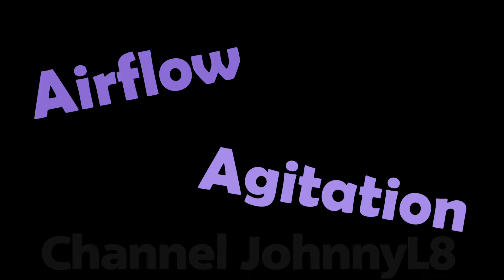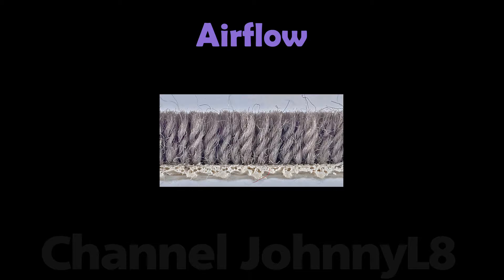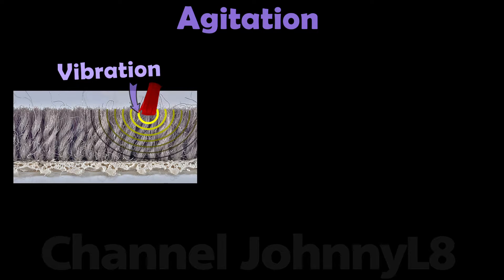Removing particles requires air flow and agitation. The vacuum head is at low pressure, and thus air flow is generally upwards through the fibres, but there is some sideways flow as well. This air flow moves loose particles that aren't trapped by fibres in the pile. Agitation is achieved in two ways. Firstly, impact from a brush bar striking the pile surface can cause vibrations which can help shake loose some of the trapped particles.